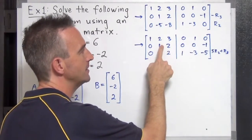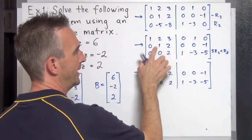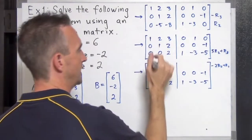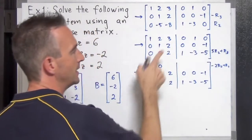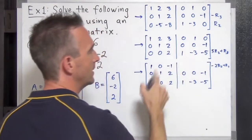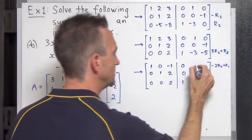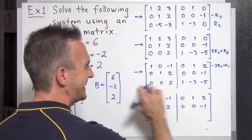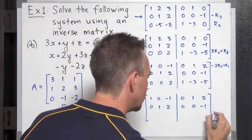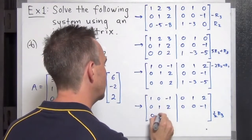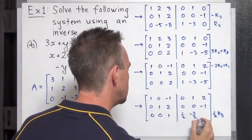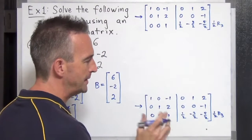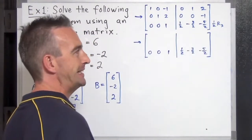I'm going to use the leading one in row two to turn the entry in the first row into zero. Multiply row two by negative 2 and add it to row one: that gives 1, 0, negative 1, 1, 2, 0 for row one. Now we have no choice but to create our leading one in the third row — we multiply the third row by one half. That gives 0, 0, 1, one half, negative three over two, negative five over two. Best to leave them as improper fractions.